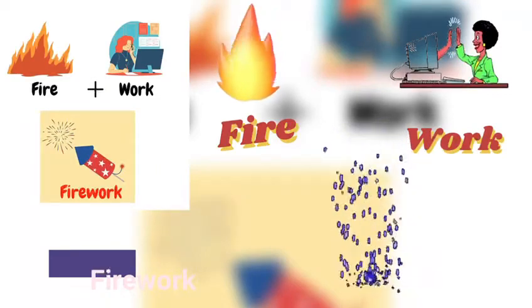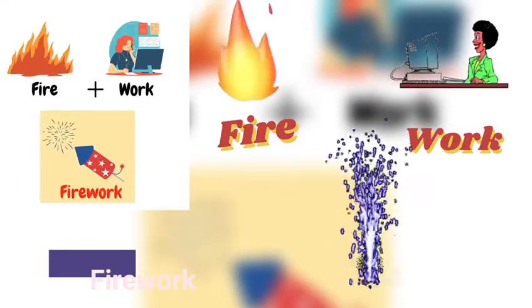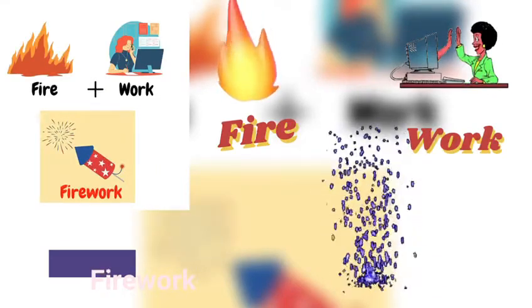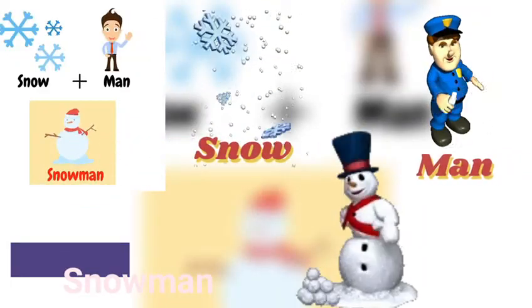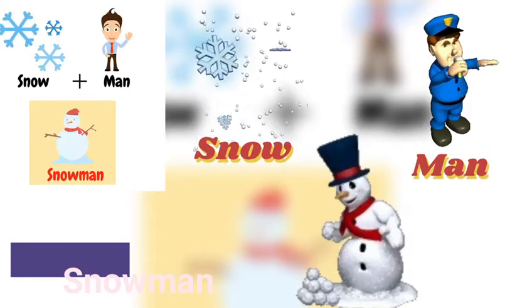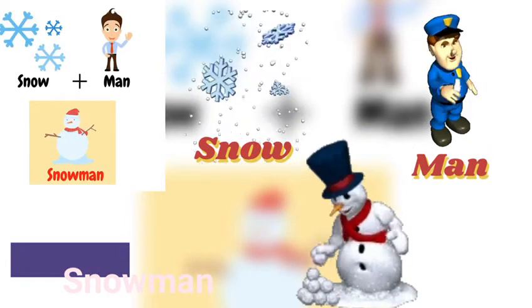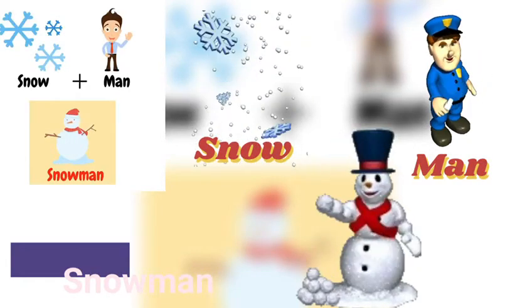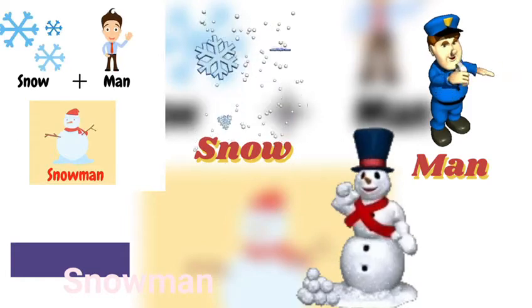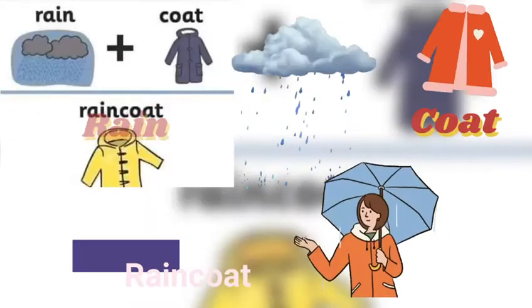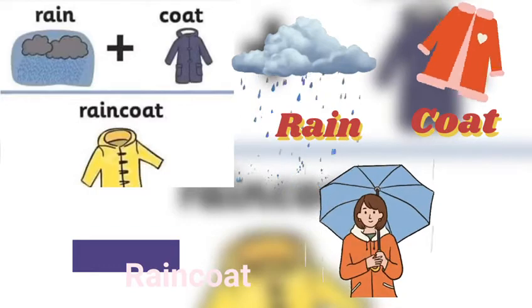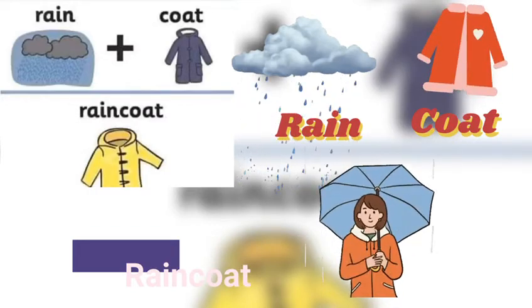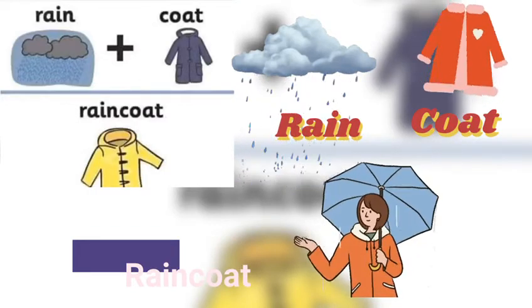'Fire' is one object, 'work' is the second object — you connect them into 'firework'. 'Snow' is one object, 'man' is the second object — you connect them into 'snowman'.